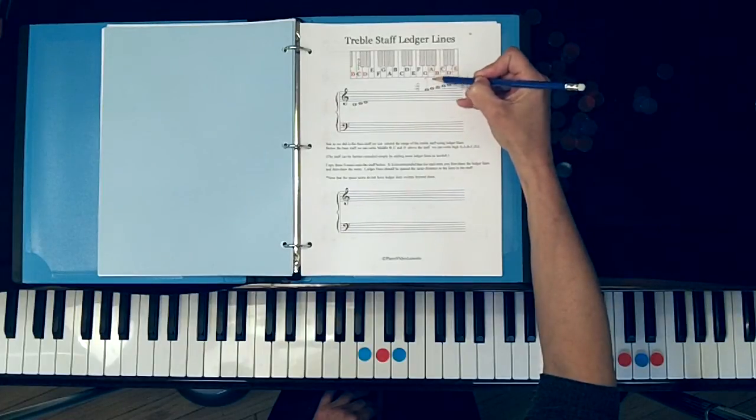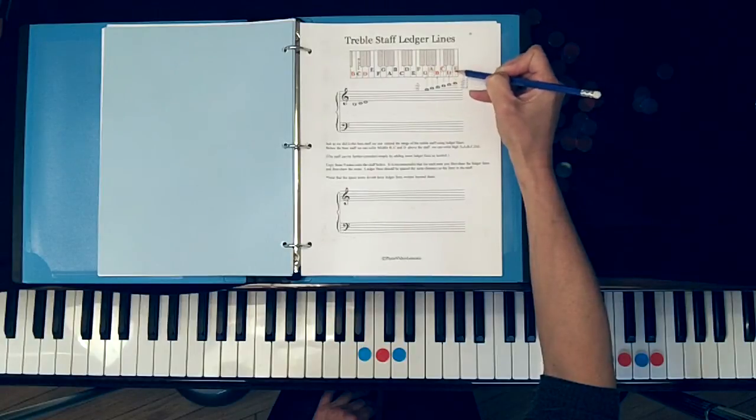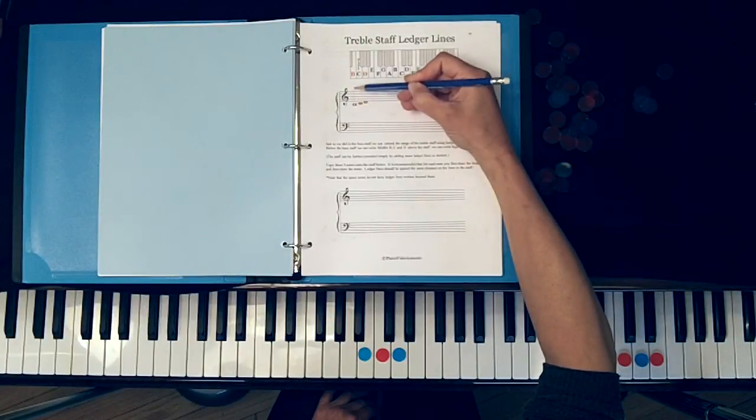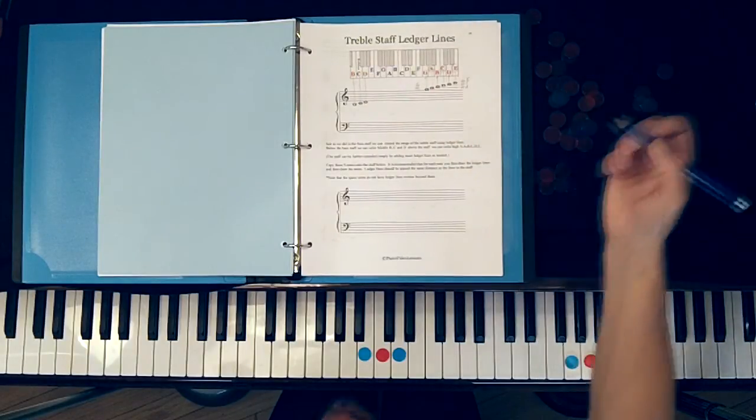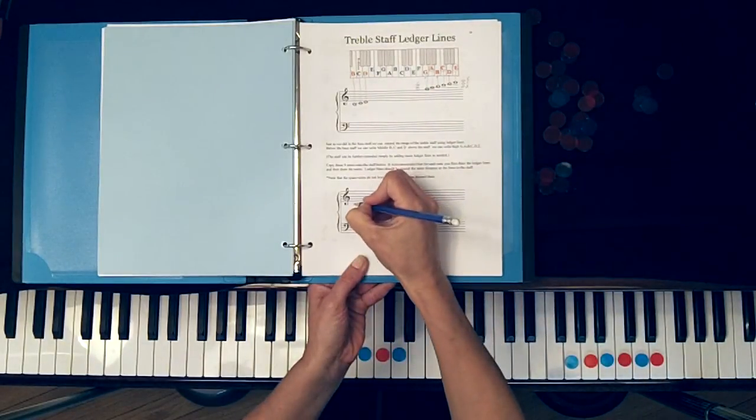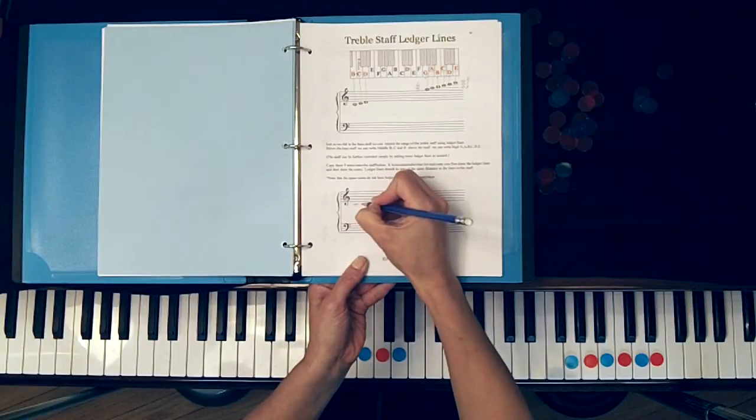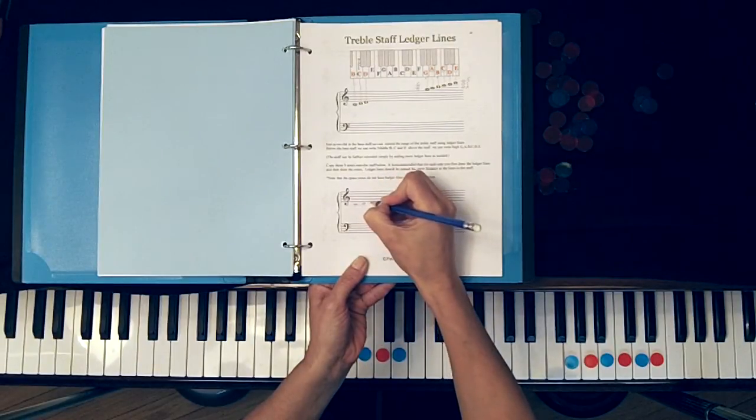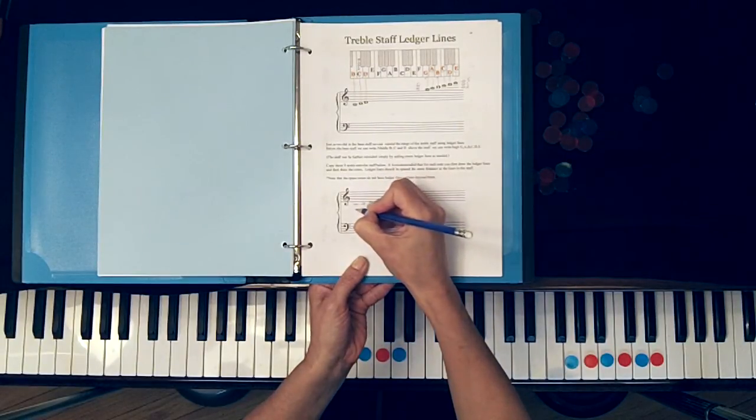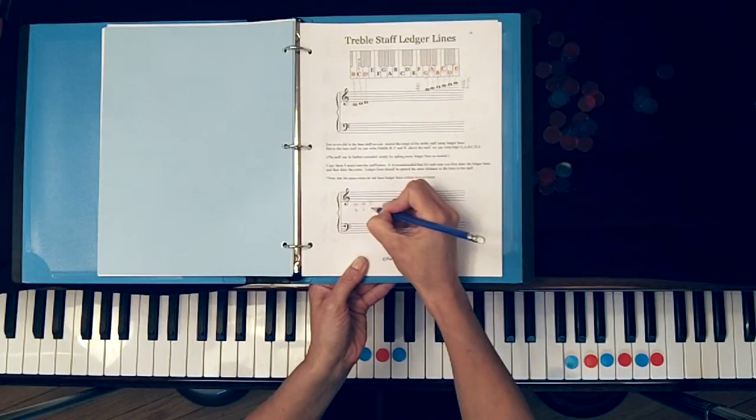What you could do now is connect these notes up to their keys on the keyboard diagram, the same thing here with the B, the middle C, and the D. Then what I would like you to do is practice to draw these notes on the staff.